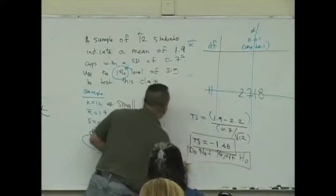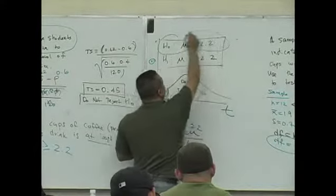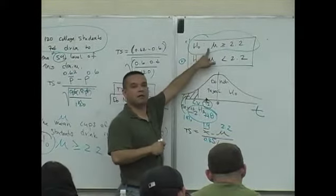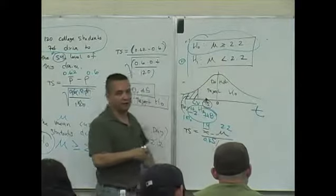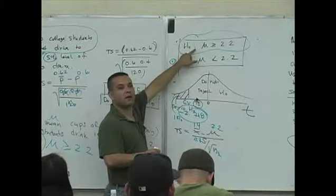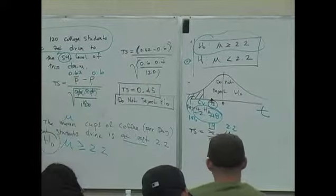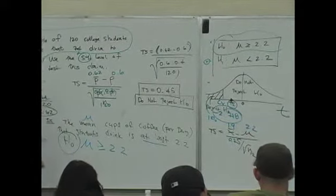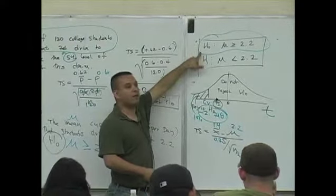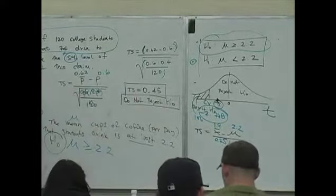You're not rejecting the null. What does it mean not to reject the null? You're accepting the statement that the mean is at least 2.2 cups of coffee per week. So not rejecting that null means the sample is supporting this hypothesis. So here's the difference between everything that we've done so far and what we do now. We have a small sample. So for a small sample, you're going to use this t-table.